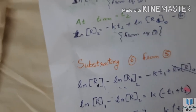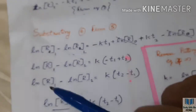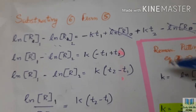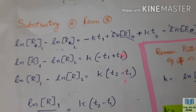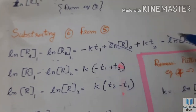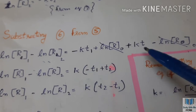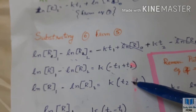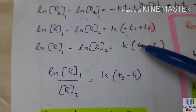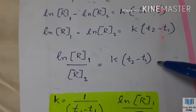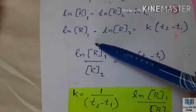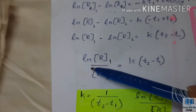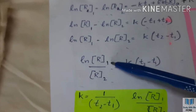The minus is just a sign. After subtraction and cancellation, we add k to the other part. Using the natural logarithm property, subtraction becomes division. So ln([R₁]/[R₂]) equals k times (t2 minus t1), which gives k equals ln([R₁]/[R₂]) divided by (t2 minus t1).